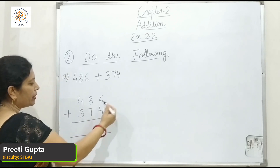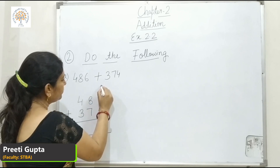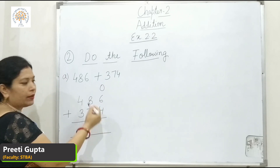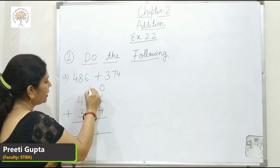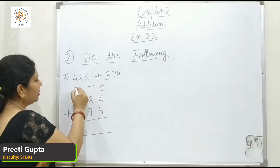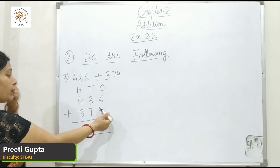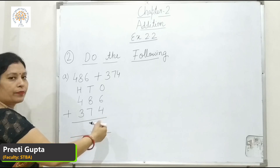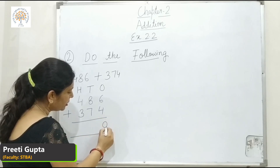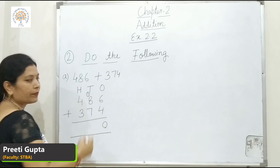Students, you know 6 and 4 are in the 1's place, 8 and 7 are in the 10's place, and 4 and 3 are in the 100's place. 6 plus 4 is 10 — we write 0 here and carry 1 here.